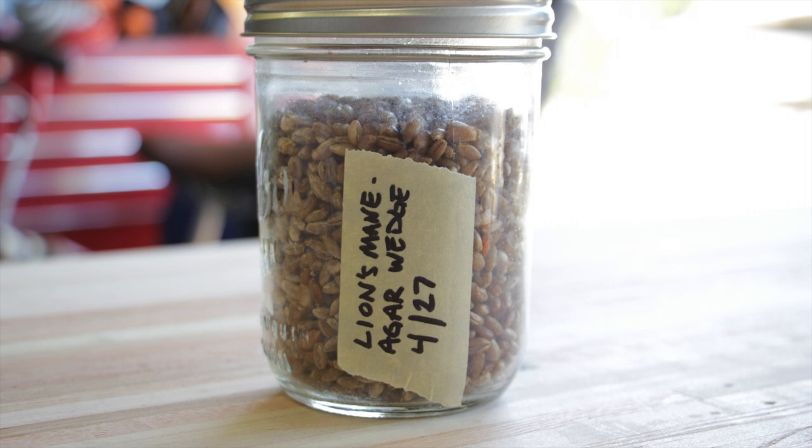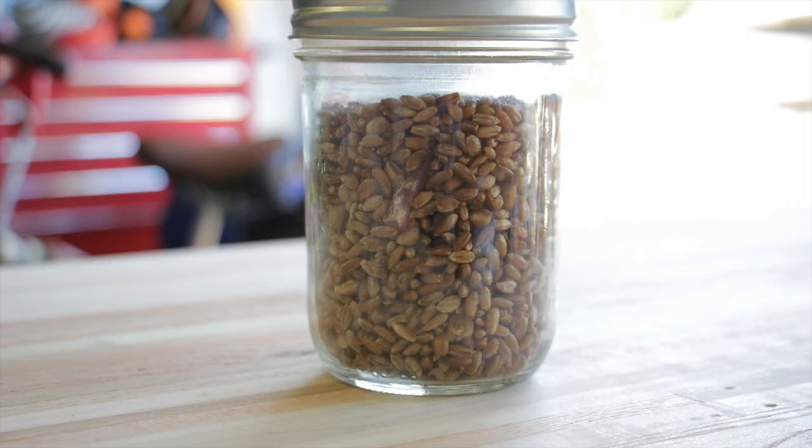Good morning YouTube, it's Jared from One Earth Mushrooms. Today I'm going to inoculate a rye grain jar with some lion's mane that I have sitting in the fridge. It's pretty small so I'm only going to do one jar, putting all my eggs in one basket so to speak. So let's get right into it.